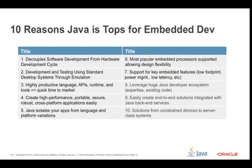The top 10 reasons why Java is the top environment for embedded development: one, it decouples software from hardware development cycles; two, development and testing using standard desktop systems for emulation; three, highly productive language, APIs, runtime and tools equals quick time to market; four, create high-performance, portable, secure, robust cross-platform applications easily; five, Java isolates your apps from language and platform variations; six, most popular embedded processors are supported; seven, support for key embedded features — low footprint, power management, low latency; eight, leverage a huge Java developer ecosystem of 9 million developers; nine, easily create end-to-end solutions integrated with Java backend services; ten, solutions from constrained devices to server-class systems.